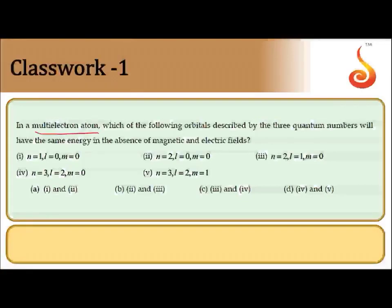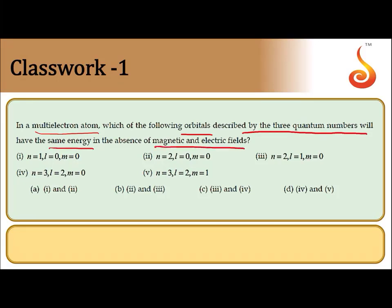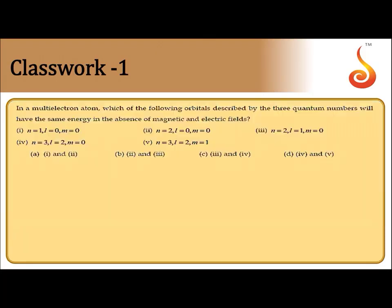The first question: in a multi-electron atom, which of the following orbitals described by three quantum numbers will have the same energy in the absence of magnetic as well as electric fields? Energies can be found by the values of n and l. If the n plus l value is the same, then we can say the energy of the orbitals are the same.